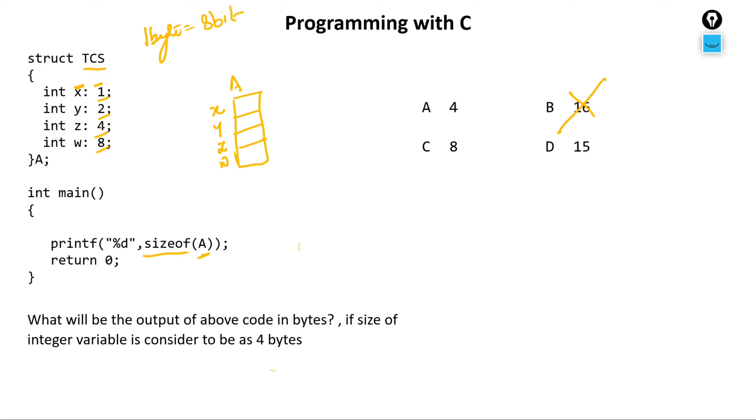So 1 plus 2 is 3, 3 plus 4 is 7, and 7 plus 8 is what? 15. The answer is 15. What, 15? 15 bits. So the answer is 15? No, the answer is not 15. All the answers are in bytes.